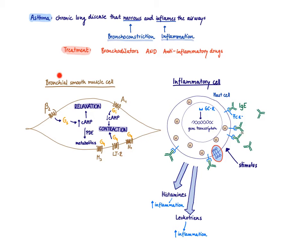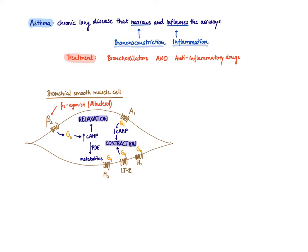Let's look first at the bronchial smooth muscle cell. There are several G-protein-coupled receptors on the cell that mediate either relaxation or contraction. If we want drugs that help us as bronchodilators, we could either stimulate receptors that mediate relaxation or block the contraction. The only class of drugs that directly mediate bronchodilation are beta-2 agonists — they all end in '-terol', like albuterol or salmeterol. They directly mediate smooth muscle relaxation, and therefore these are the first-line drugs for an acute asthma exacerbation and for asthma in general.